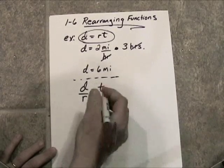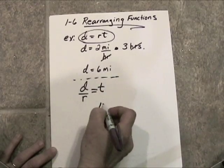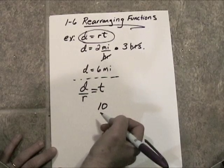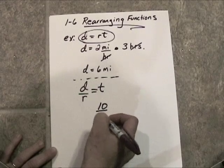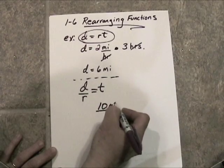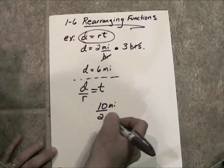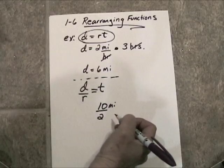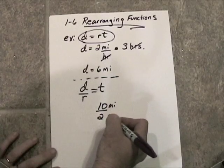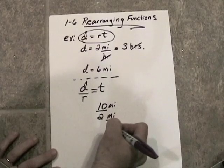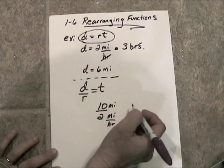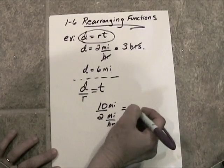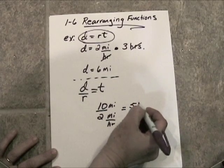So let's see. She wants to go 10 miles and we want to see how long this is going to take. So we take the 10 miles and we divide it by the 2 miles per hour. And that's going to give us 5 hours.